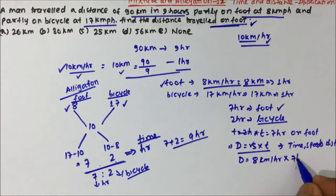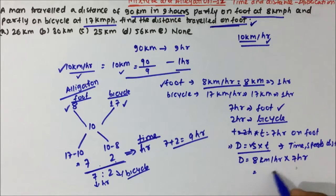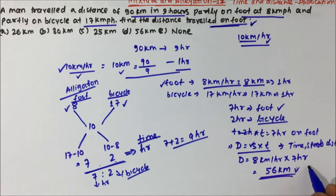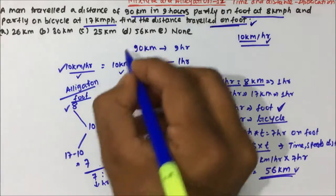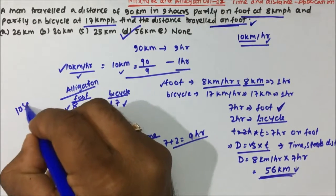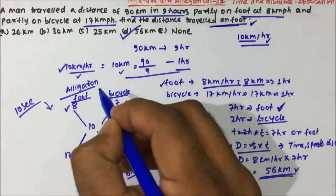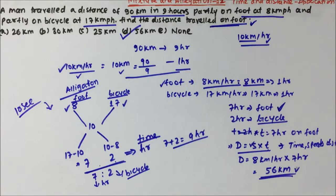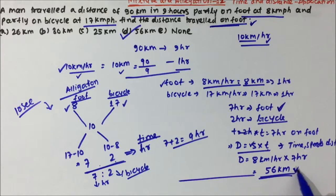The speed on foot is 8 kilometers per hour and the time is 7 hours. So 8 × 7 = 56 kilometers. The man covered 56 kilometers on foot, and that is what the question asked. So for question number one, option D is the correct answer. Using the Allegation method this takes under 10 seconds, though here it took a few minutes because each step was explained in detail.